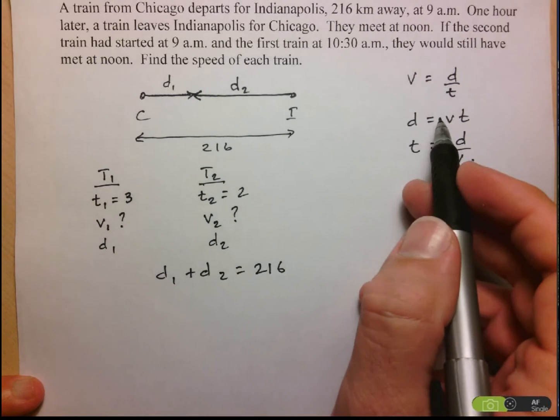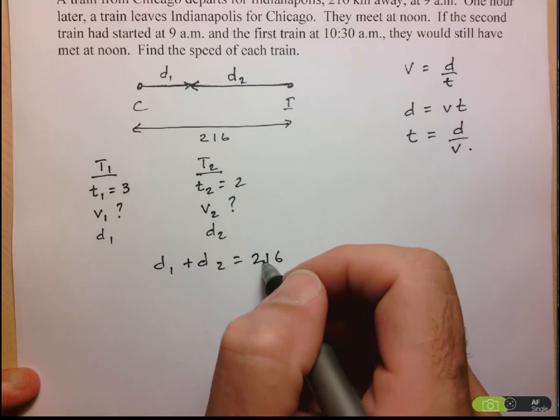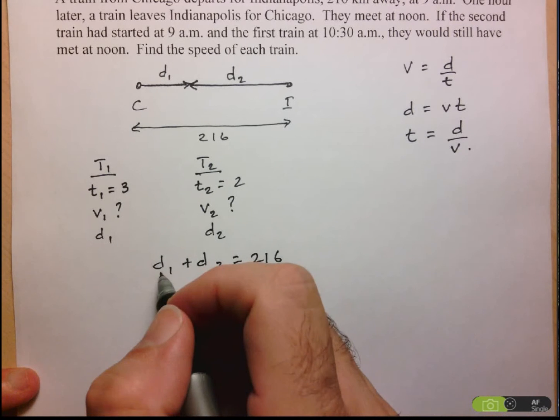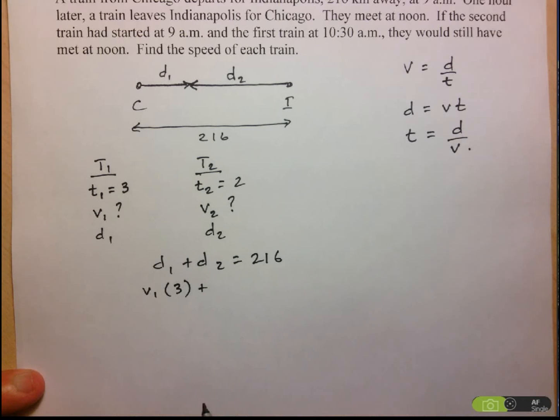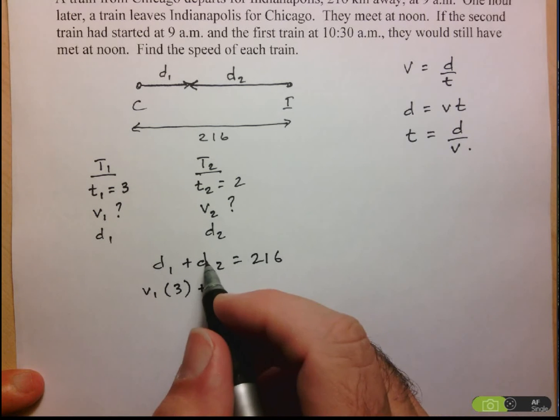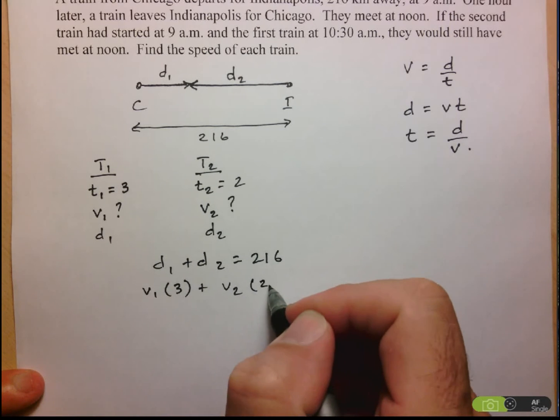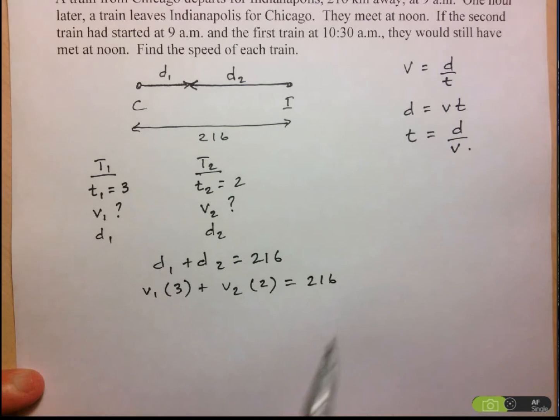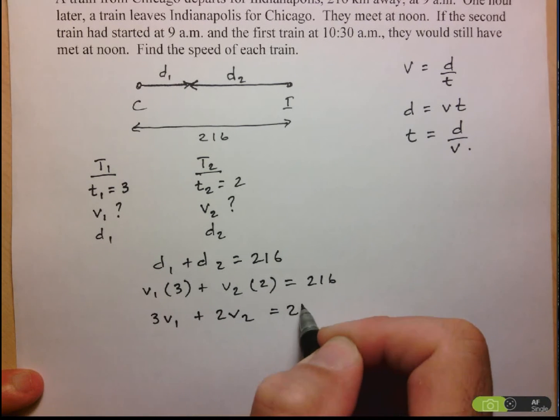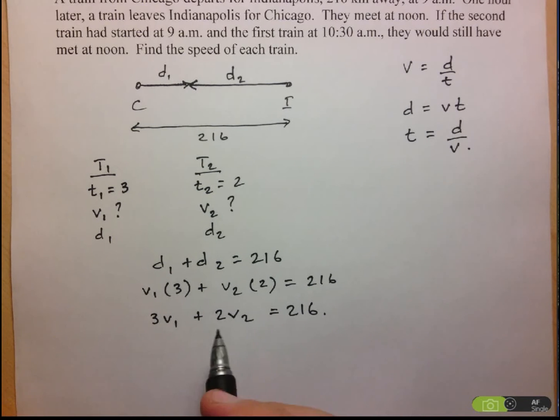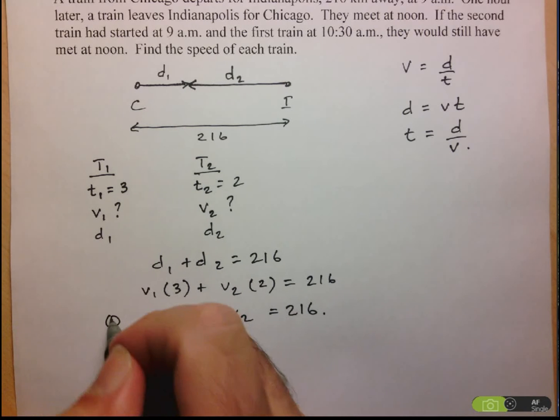So I'm going to use these relationships here to turn this equation with respect to distance into an equation with respect to speed. So I do know that the distance is the speed times time, so it's V1 times the time, which is 3. And then we've got D2, which is the speed of the second train, times the time that goes by, which is 2 hours. It has to be equal to 216. So if we clean this up, what we have is 3V1 plus 2V2 equals 216. And this is quite good, because I've got an equation with the two unknowns that I'm trying to determine. So this will be my equation 1.